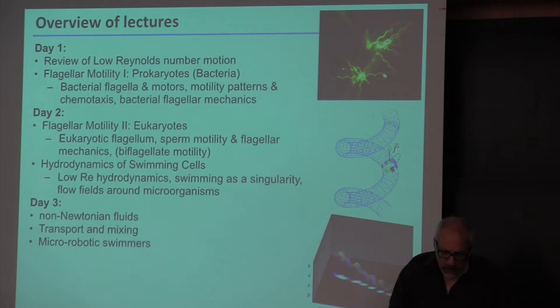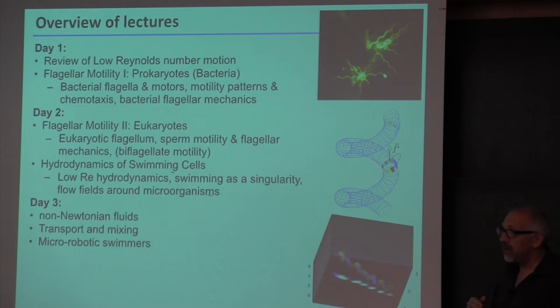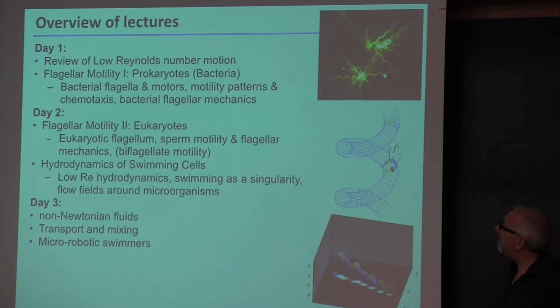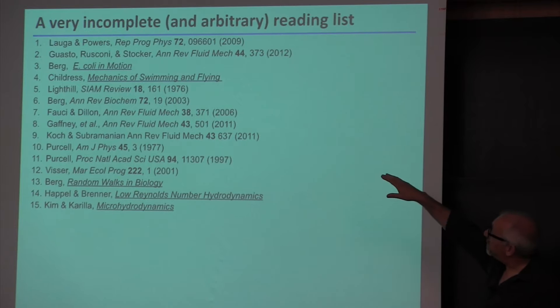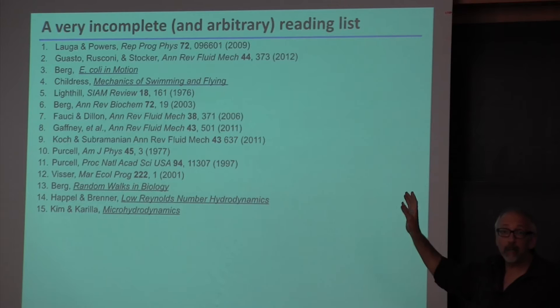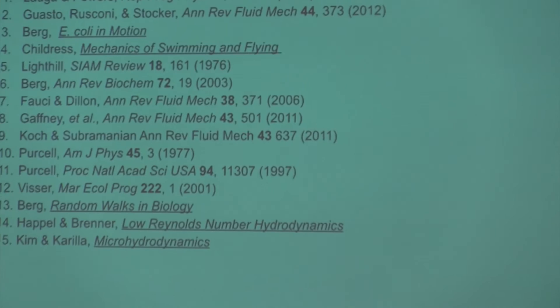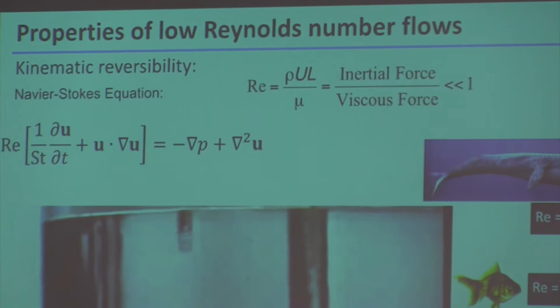I'll start by talking about some stuff you've already heard, but hopefully hearing it a second or third time will make it sound familiar. First, a list of papers: Eric Lauger and Tom Powers wrote a very nice review article on low Reynolds number swimming — it's a little old now but really a great article for those who want to read it.